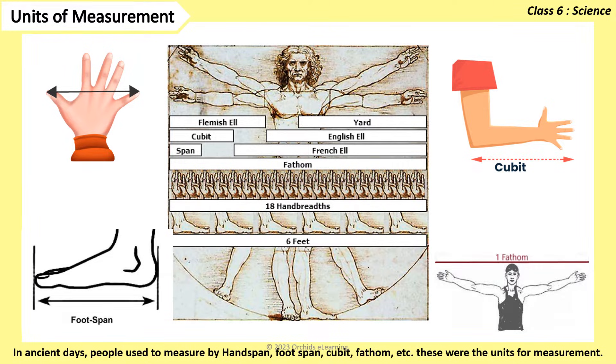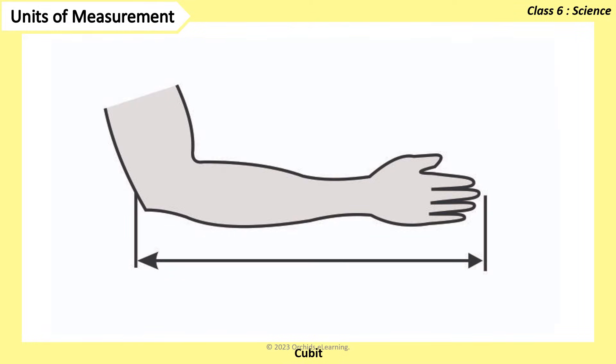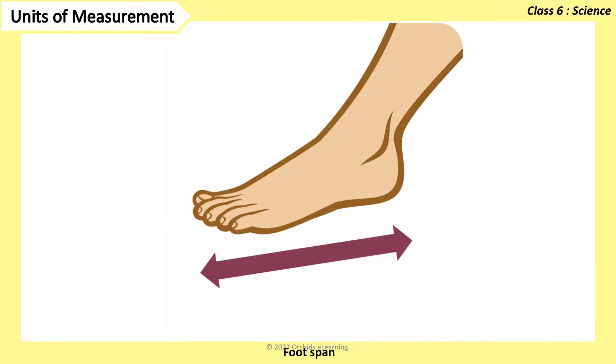These were the units for measurement. Handspan is the distance between the tip of the thumb and the tip of the little finger of a fully stretched hand. Cubit is the distance between the elbow and the fingertip. Fathom is length of the outstretched arms, and foot span is the distance between the tip of the big toe and the heel.